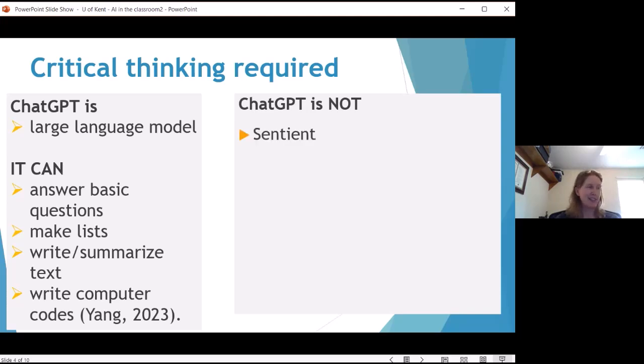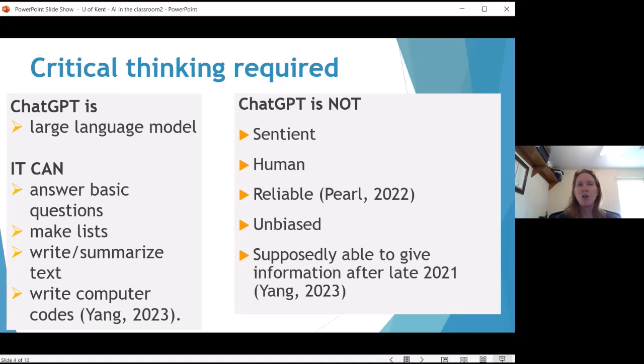ChatGPT cannot, well it's not sentient and I make sure that my students understand that it's not sentient and that it hallucinates when it doesn't know the information. I want to make sure they understand that they are not talking with another human. So it's not human. It's not always reliable because of those hallucinations. It is not unbiased and we've seen other comments about that so far today. And supposedly it only gives us information up to 2021, but I keep seeing things online that make me question if that's actually true.